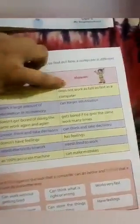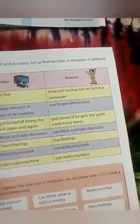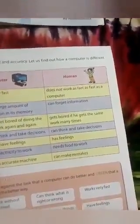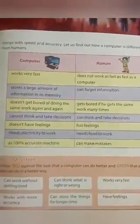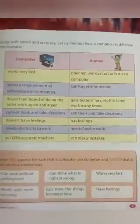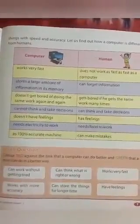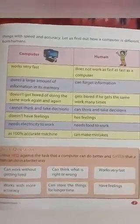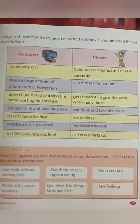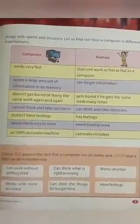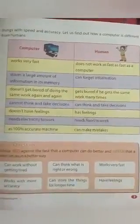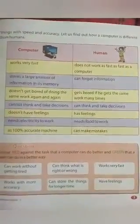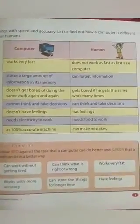Now for the human side: a human does not work as fast as a computer. We can forget information sometimes — a computer stores everything in its memory and doesn't forget. A human gets bored if given the same work many times. However, humans can think and take decisions on their own.